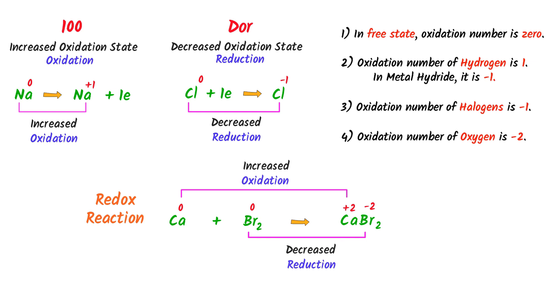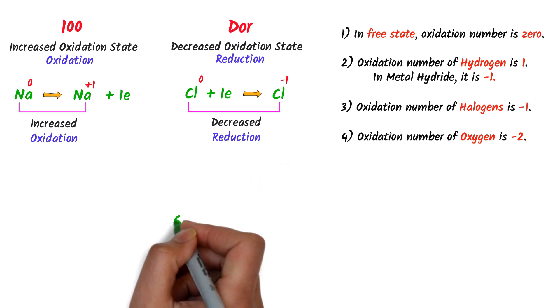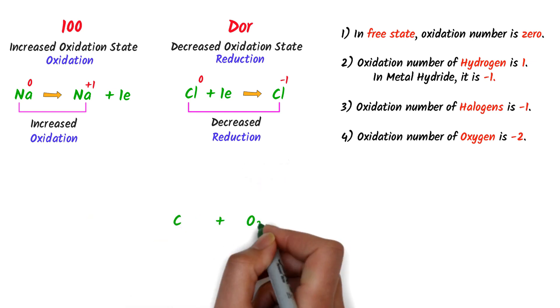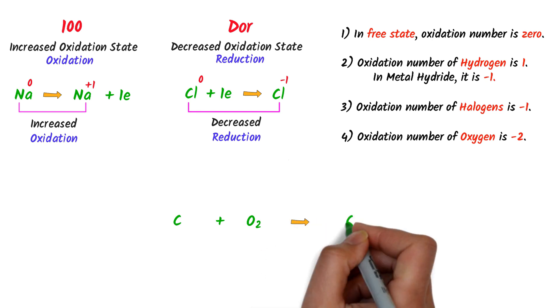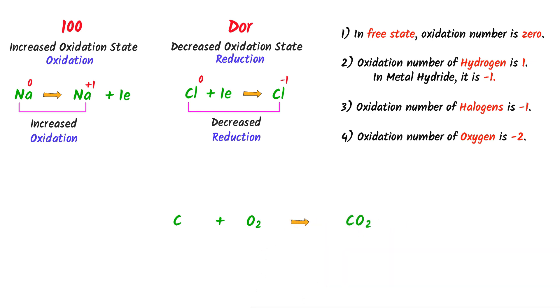Therefore, remember that a reaction is a redox reaction if oxidation and reduction both take place. Now consider our second example: carbon plus oxygen gas reacting together to form carbon dioxide.